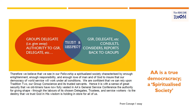Let's have a look at what the Concept One essay says about democracy. 'We believe that we see in our fellowship a spiritualized society characterized by enough enlightenment, enough responsibility, and enough love of people and of God to ensure that our democracy of world service will work under all conditions.' What Bill is saying here is if we get the democracy within AA World Service right, it will never fail us. This indicates we have to put the rights of participation, decision, appeal, and petition very high on our priority list.